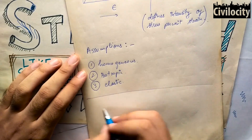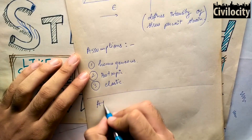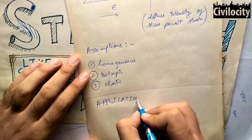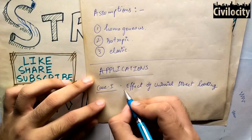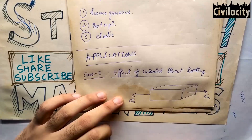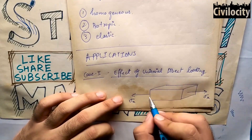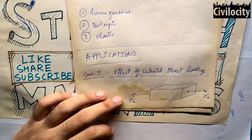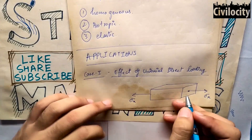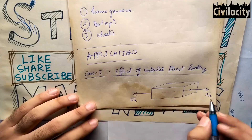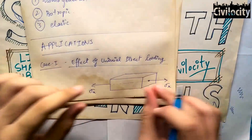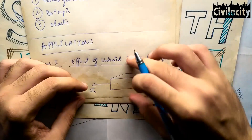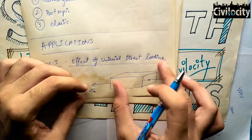Now let's talk about Hooke's Law applications. There are two cases. The first one is the effect of uniaxial direct loading. Uniaxial means that only one axis is loaded — the load acts only in one direction. If I put load in the x-direction, the stress produced will also be in the x-direction, given the name sigma x.